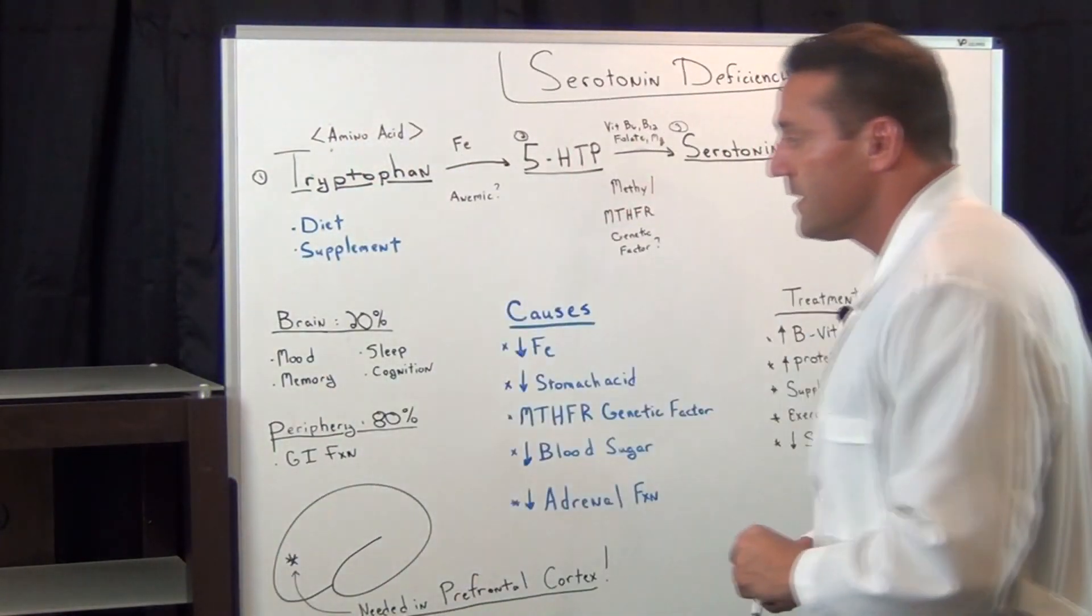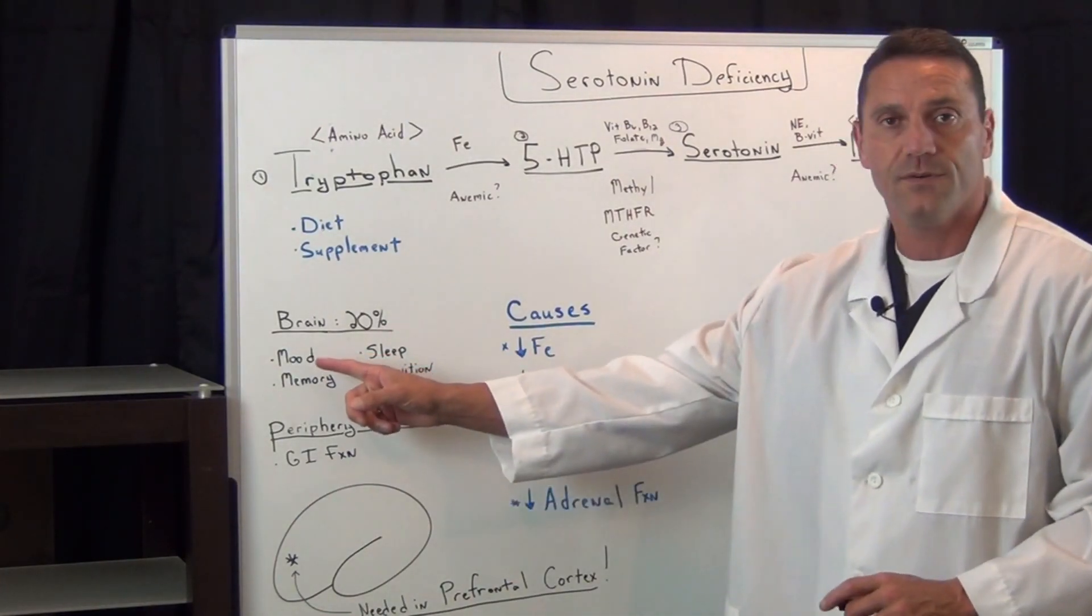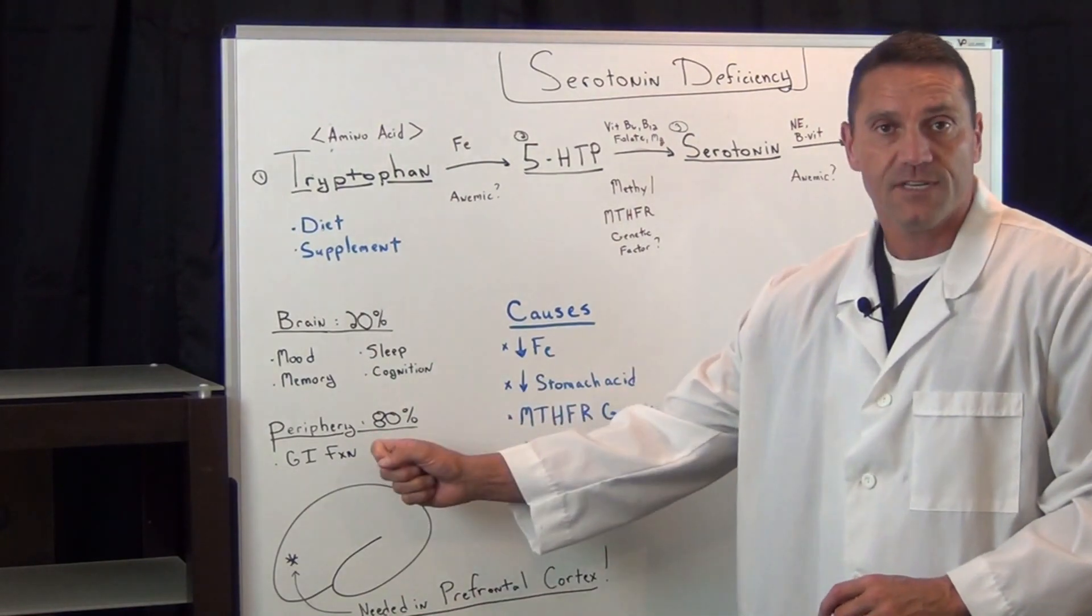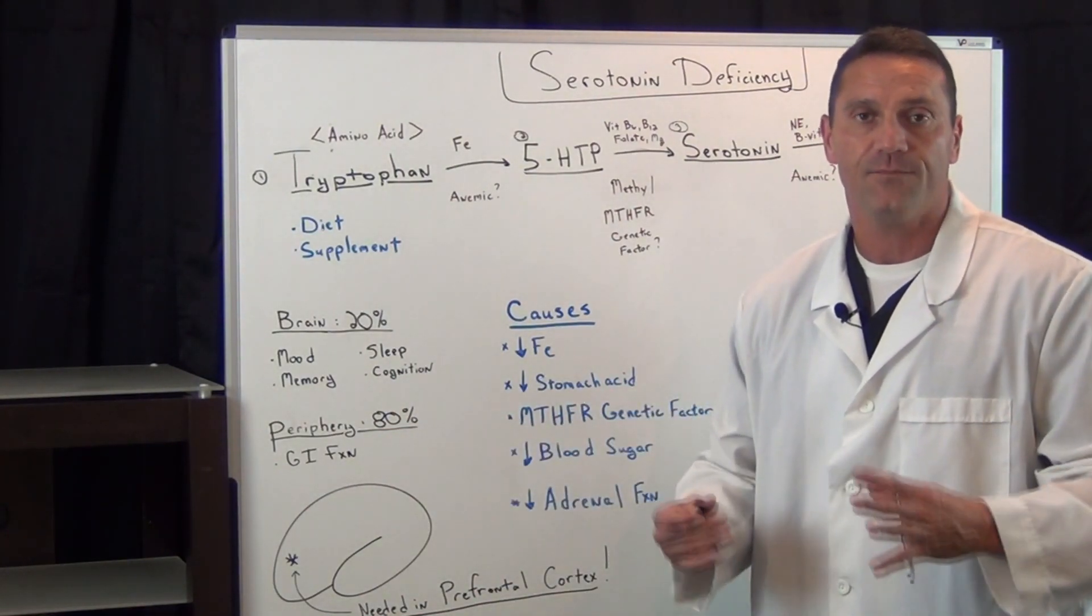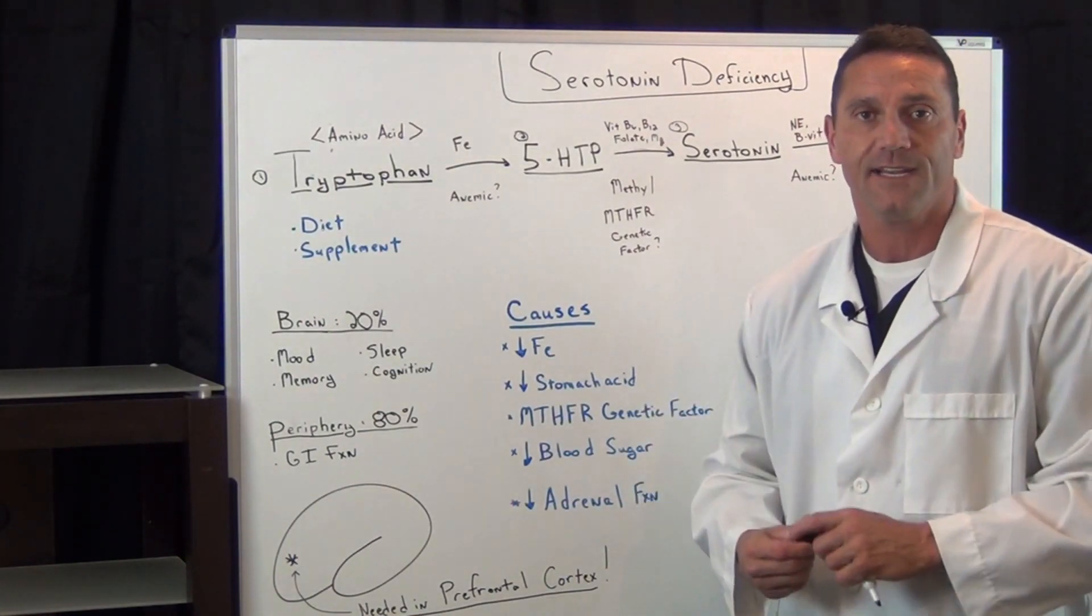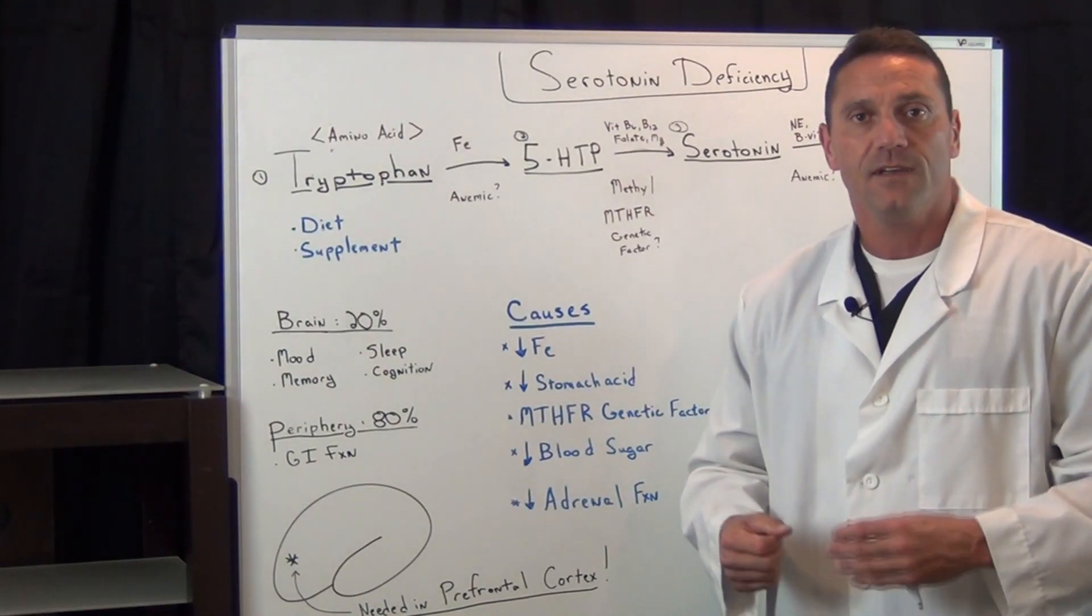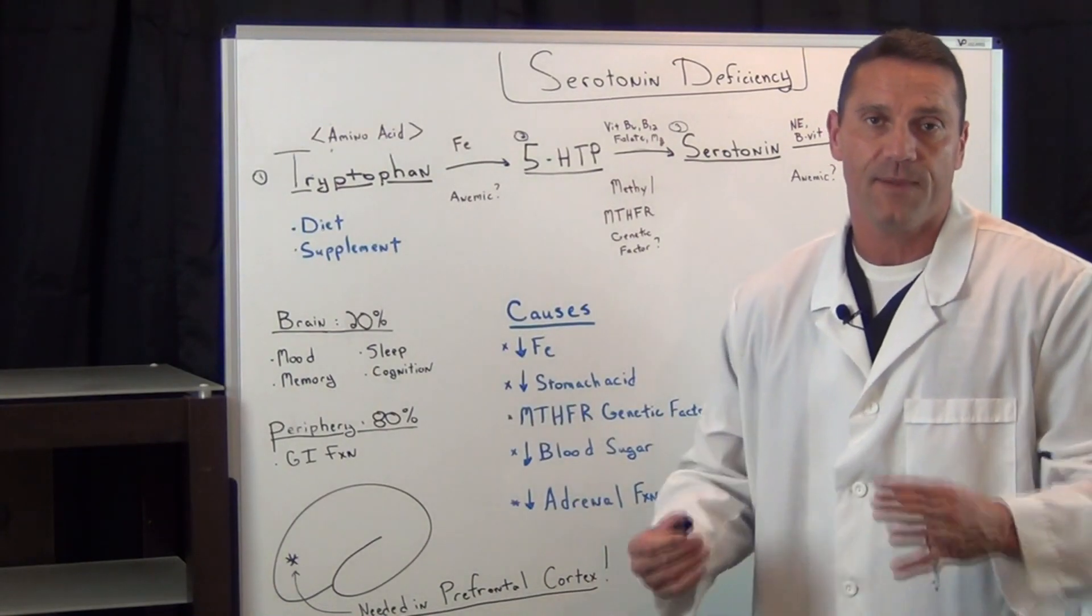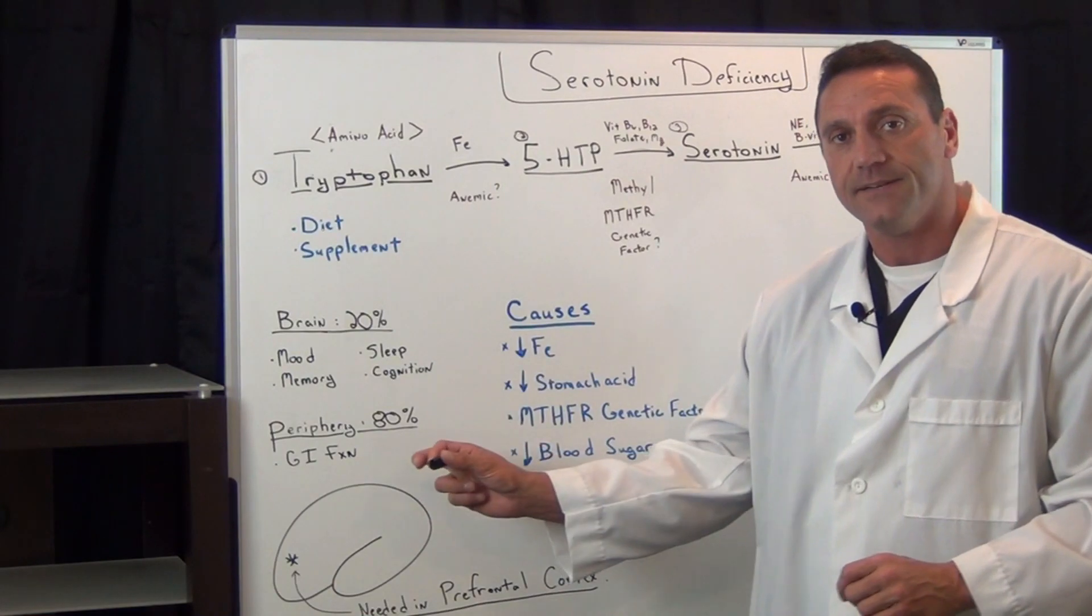So again, 20% is produced in the brain, and it's involved in mood, memory, sleep, and cognition. 80% is produced in the periphery, basically the gut. So if you have poor gut function, if you have malabsorption syndrome, or if you're on the standard American diet, you are not going to be producing enough serotonin, which is going to affect your sleep. So a lot of my patients who have poor sleeping patterns, it's due to the fact they're not producing enough because of a bad gut.